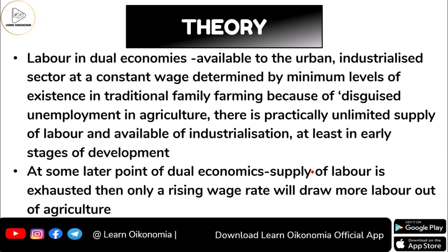The theory says that in a dual economic model you will have an urban industrialist sector which gives a constant wage to laborers. The traditional agriculture sector has a problem of disguised unemployment. Whenever disguised unemployment exists in agriculture, the marginal product of labor is equal to zero, and people working in agriculture or family farming would be getting something equal to subsistence wage. For this reason, there is practically unlimited supply of labor available in the agriculture sector.